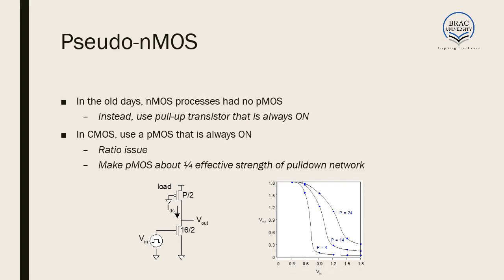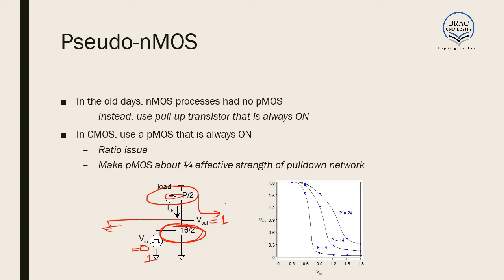The first circuit family we will look at is pseudo-NMOS. What pseudo-NMOS does is the pull-down network is designed as it was in static CMOS, but the pull-up network consists of a single PMOS and the pull-up network is always on. Here the gate of the PMOS is grounded, meaning the pull-up network is always on. As a result, when V_in is equal to zero, this NMOS is turned off and V_out becomes one because the PMOS is on. And when V_in is equal to one, this NMOS is turned on and since we have ground here, V_out becomes zero, but current flows through the PMOS to ground but not through the output.